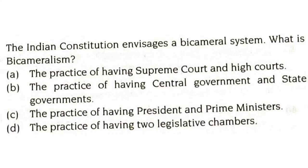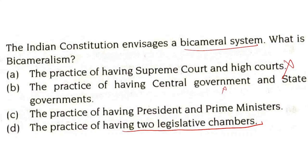The Indian constitution has a bicameral system. What is bicameralism? It is the practice of having two legislative chambers — that is, the lower house and the upper house, i.e., the Vidhan Sabha (legislative assembly) and the legislative council. There are only six states where bicameralism exists in India.